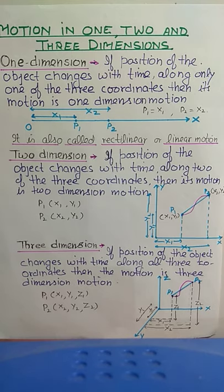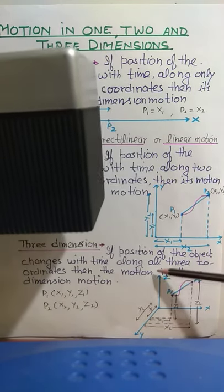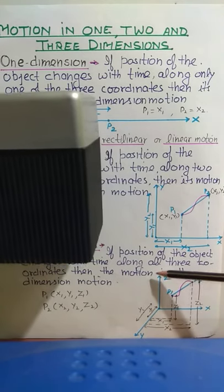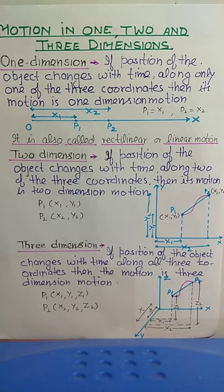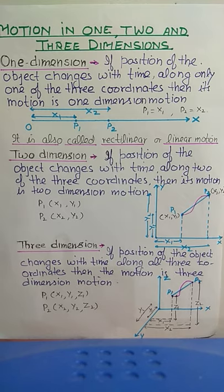On the same pattern, three-dimensional motion uses all three axes: x, y, and z. For example, a bird flying in the sky or a butterfly — it can fly in any direction along x, y, or z. Therefore, when the motion of an object involves change in position along all three coordinates, it is three-dimensional motion.